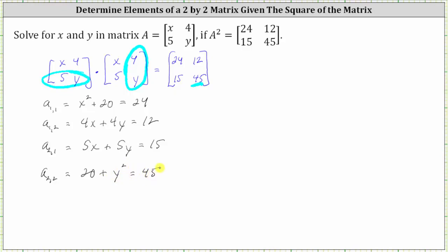So now we need to solve this as a system of equations where we have four equations and two unknowns. Notice how the first equation and fourth equation only contain one variable. Let's go ahead and solve those two equations first.